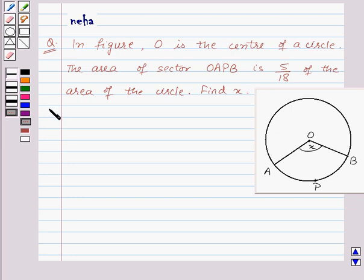Hi and welcome to the session. Let us discuss the following question: In the figure, O is the center of a circle. The area of sector OAPB is 5/18 of the area of the circle. Find x.